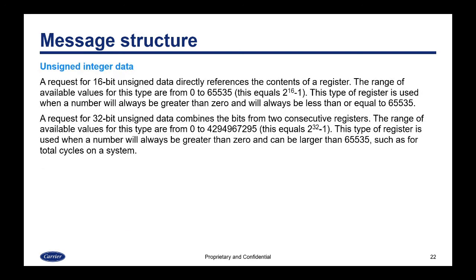A request for 16-bit unsigned data directly references the contents of a register. The range of available values for this type is from 0 to 65,535, which equals 2 to the 16th power minus 1. This type of register is used when a number will always be greater than 0 and will always be less than or equal to 65,535.